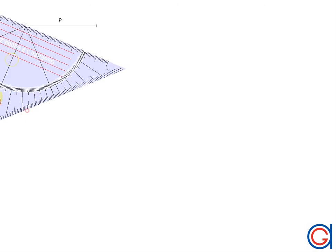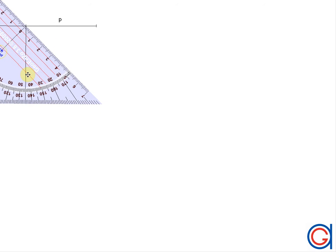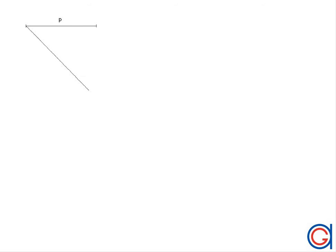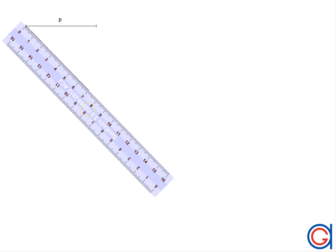The 4 centers of the spiral will be the 4 vertices of a square with length exactly 1 fourth of our length p. To work out this fourth, we will use Thales' theorem to divide our length p into 4 equal parts. So to start, we will draw a diagonal line of any angle from the left side of our given length p.